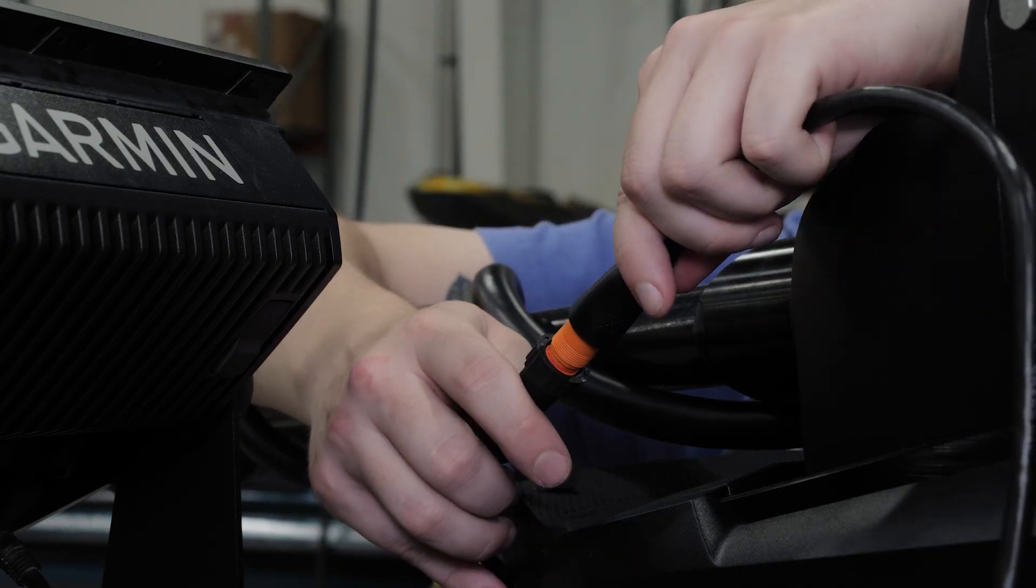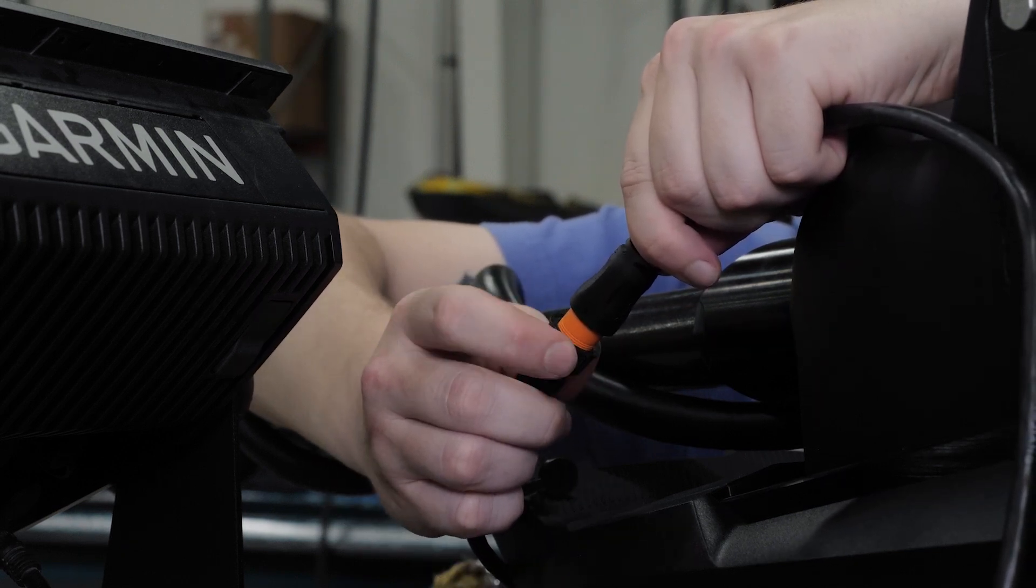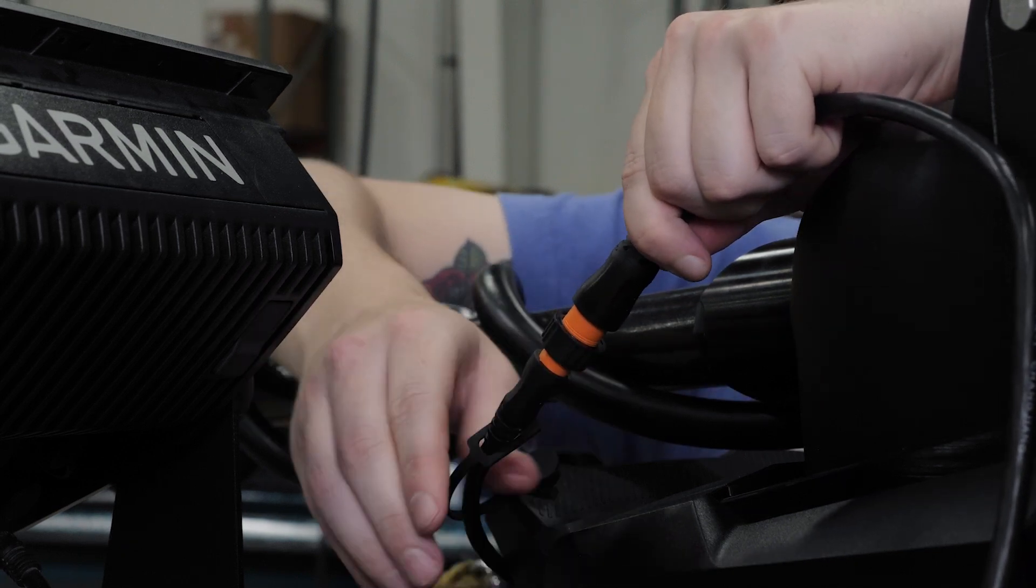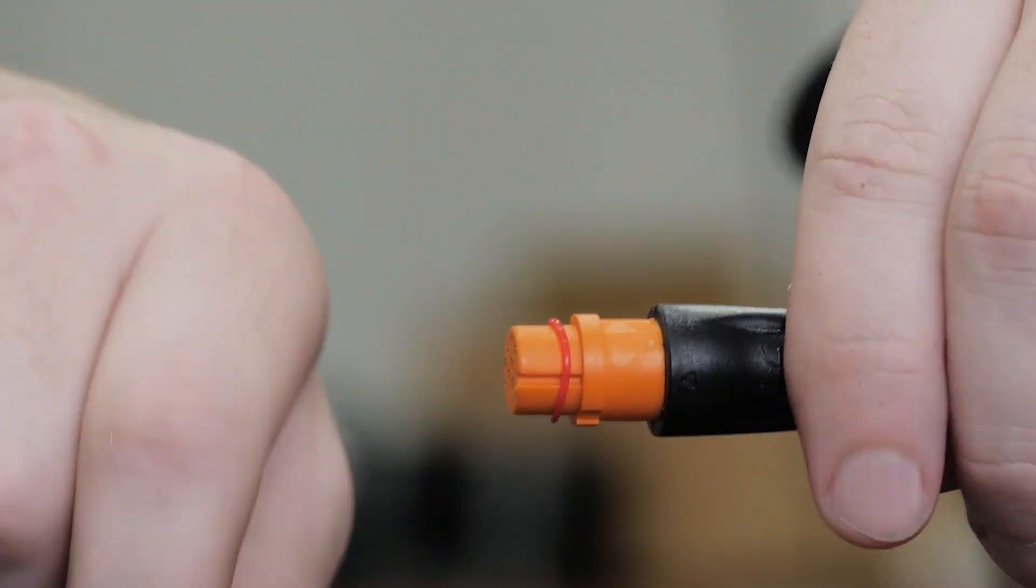Route the transducer cable to your compatible chart plotter. If needed, connect the included extension cable or a longer extension cable. Install the O-ring and the locking collar on the end of the transducer cable.